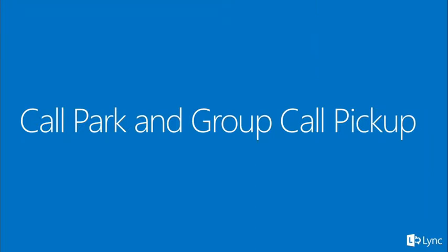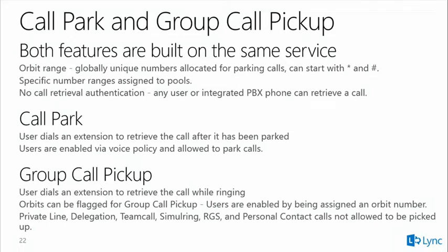For call park, orbit ranges are pool-specific — if you're on pool A, you need an orbit assigned to pool A in order to park a call. Any user on any pool can retrieve a parked call, but the parking user must have an orbit on their pool. Orbits must be unique across the entire enterprise with no overlap.